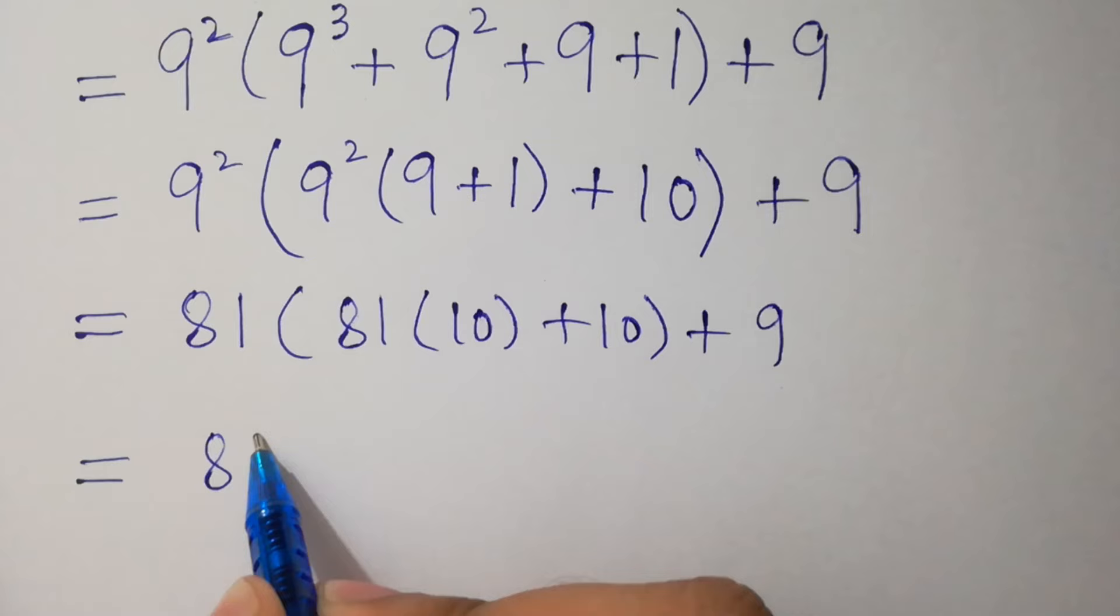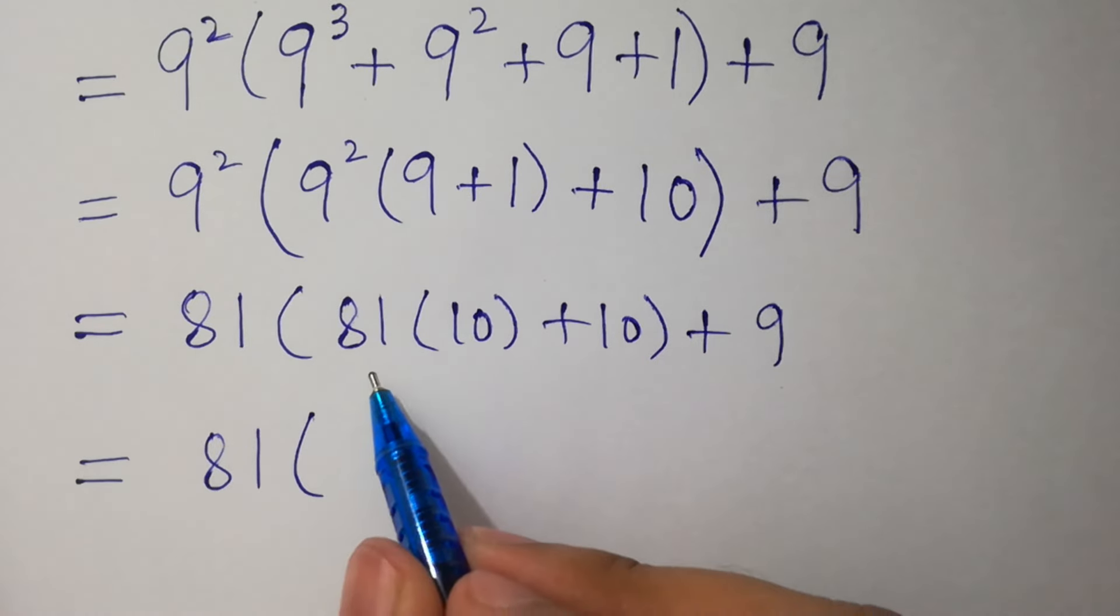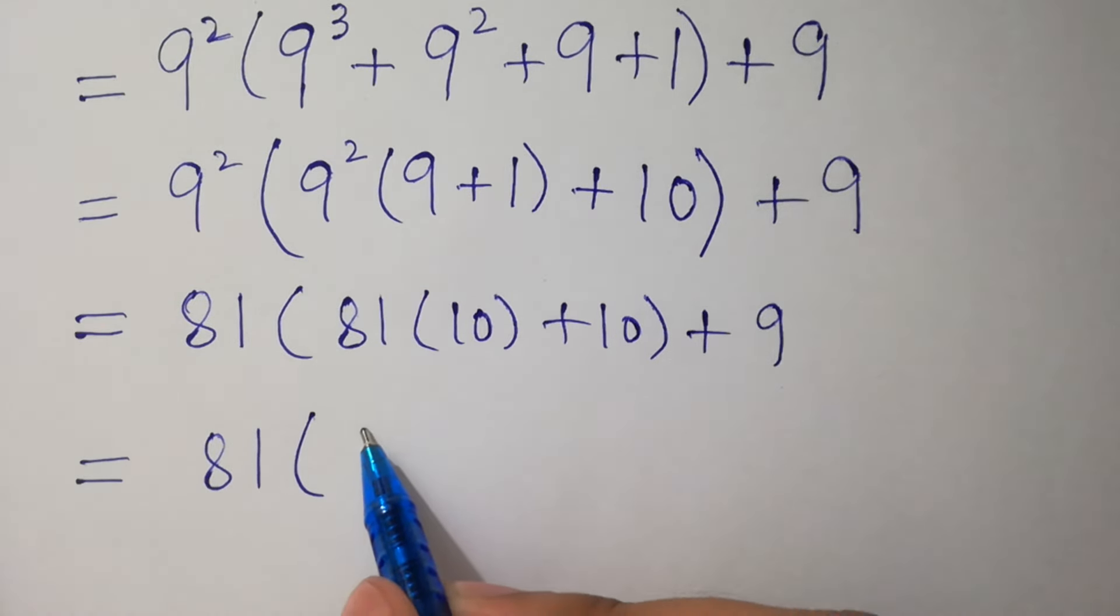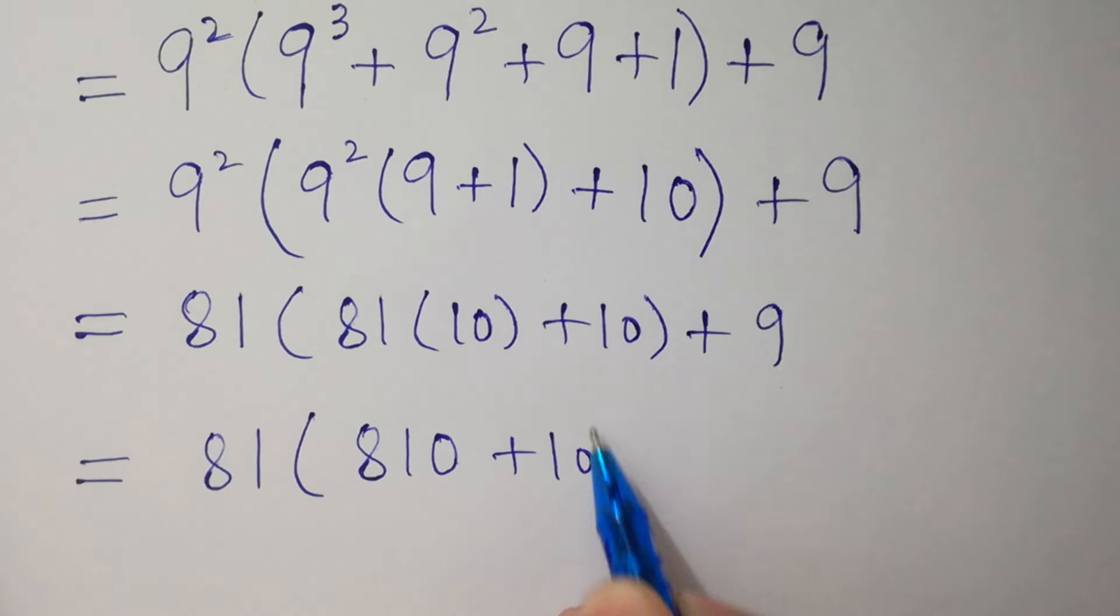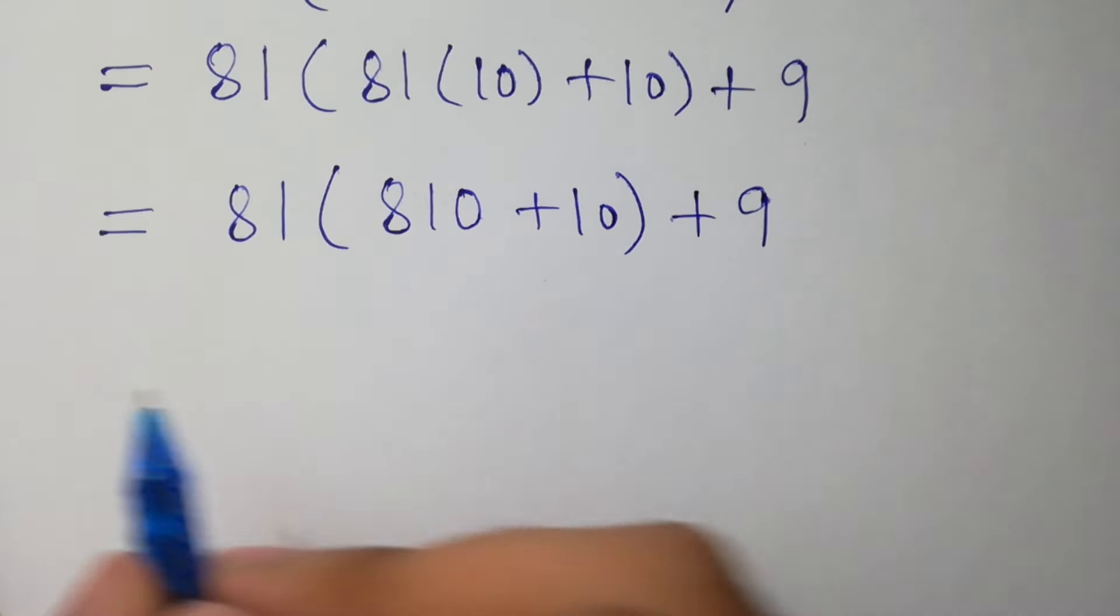The next step: 81 as it is, 81 times 10 equals 810 plus 10, close bracket, plus 9.